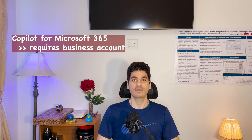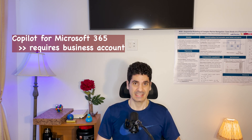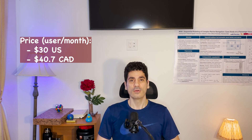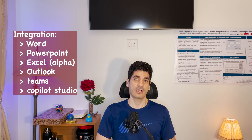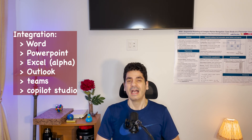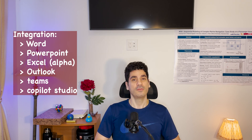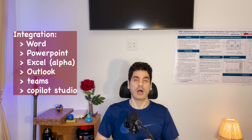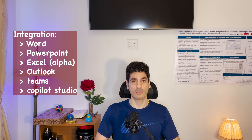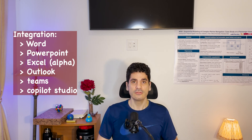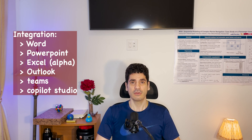The second option is Copilot for Microsoft 365, which is only available if you already have a standard or premium business account. It costs $30 USD or $40.70 Canadian per user per month. It includes all four app integrations discussed, Excel is not in beta but a more stable version, and it adds Teams integration — summarizing group talks and showing actionable items assigned to you. It also includes Copilot Studio, a low-code environment for advanced custom copilots.